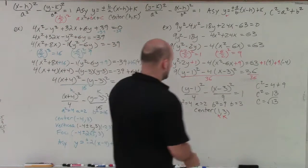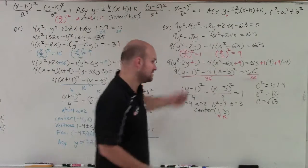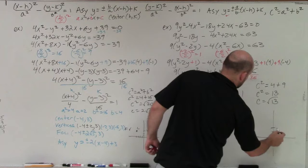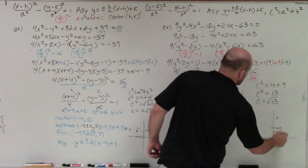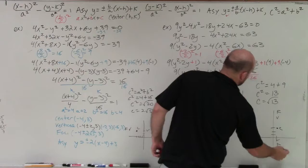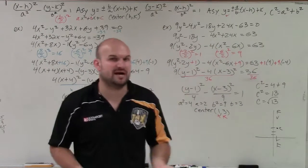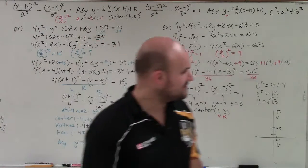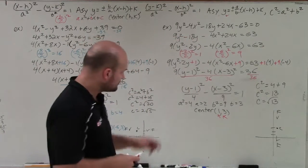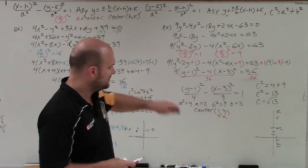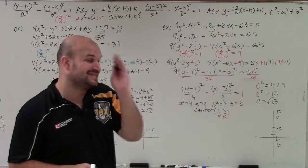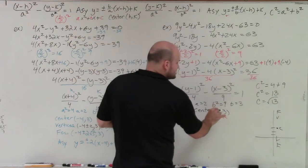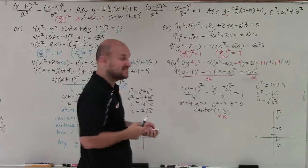Since my a is under my y, I know this is a vertical transverse axis. So my vertices and foci are going to be going vertically — up and down. The y-coordinate of my center is going to be changing when I determine the vertices and foci.